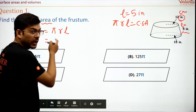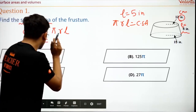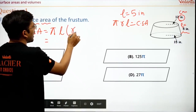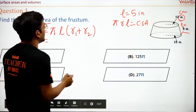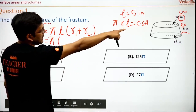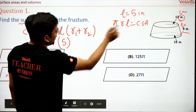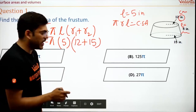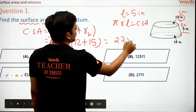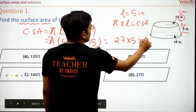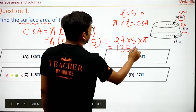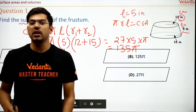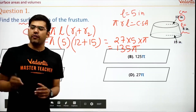Sorry, I wrote the wrong formula. The right formula for the frustum is π × l × (r1 + r2). l is 5, r1 is 12, r2 is 15. So 12 + 15 = 27, and 27 × 5 × π = 135π. The answer comes as the first option.